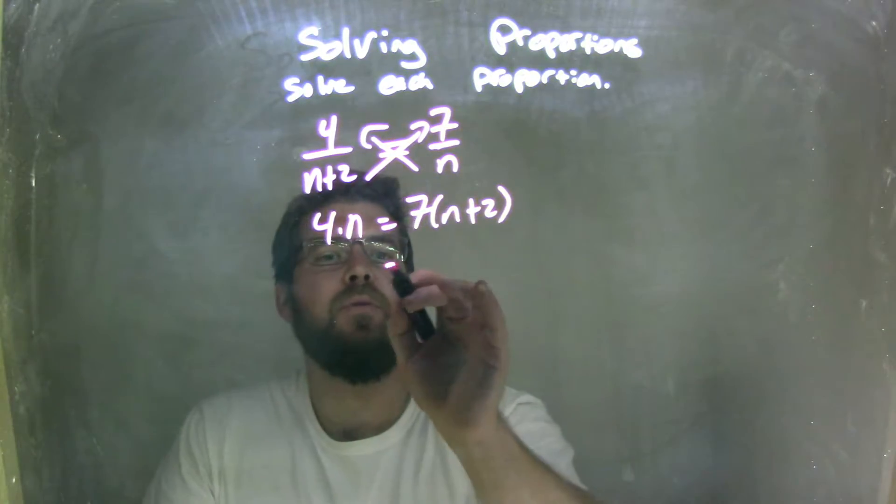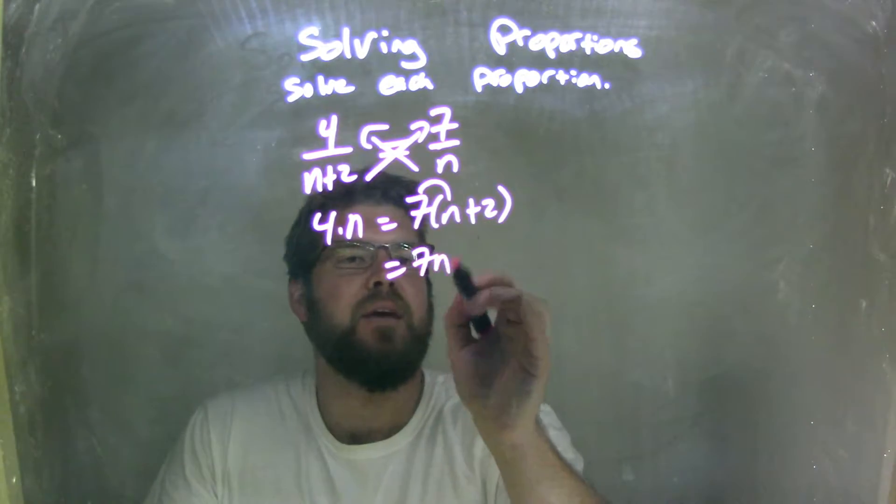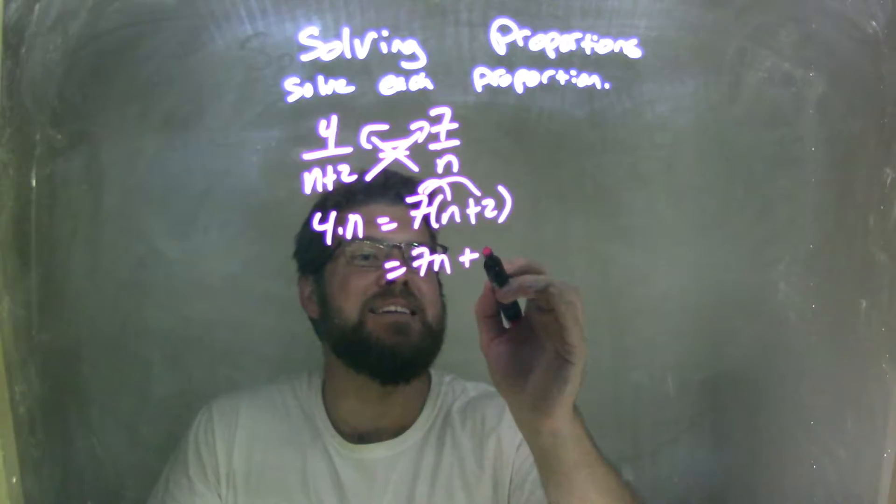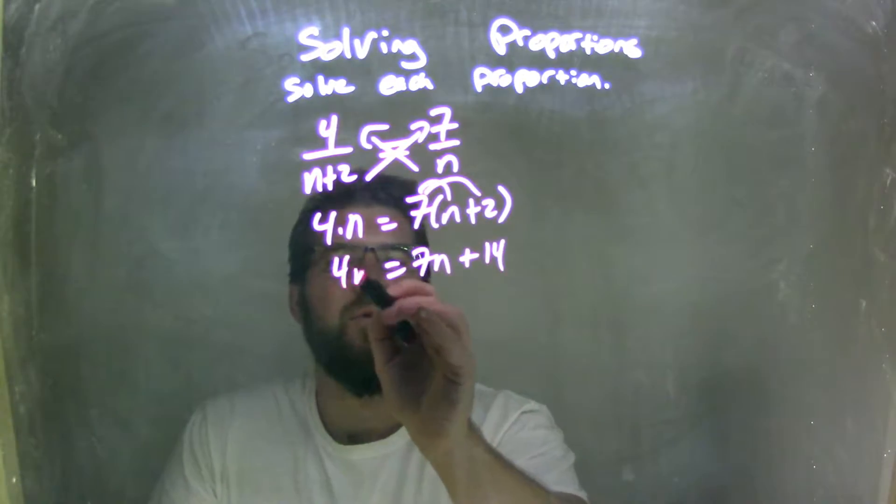I need to distribute that 7 across. So, 7 times n is 7n, and 7 times 2 is 14, and bring down the 4n right here.